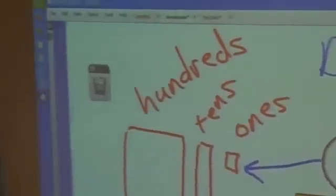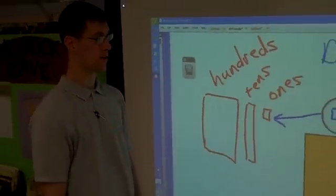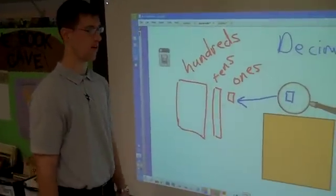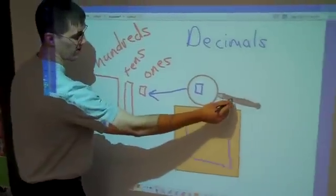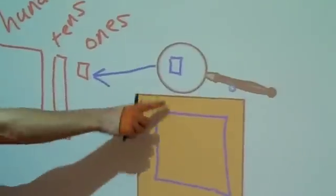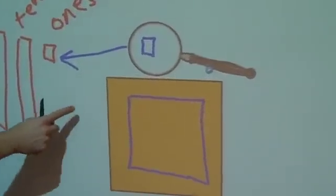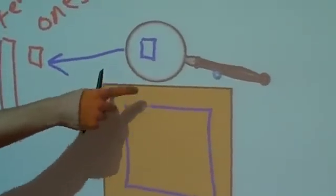When you get to parts of a one, we need to think smaller. So in order for us to go smaller than our one, I need to magnify for you. Imagine this box as a large one, magnified.